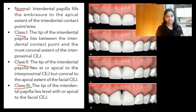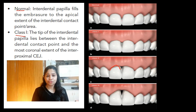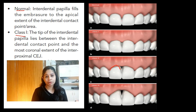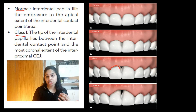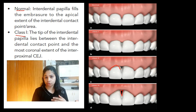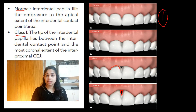In a Class 3 scenario, the tip of the papilla lies apical to the facial CEJ as well. Why is it important to know this classification? There are two major reasons. The first is aesthetics: when a patient presents with an aesthetic problem in the anterior region, they often come in with a black triangle — caused by recession of the tip of the interdental papilla, leading to a black hollow space.